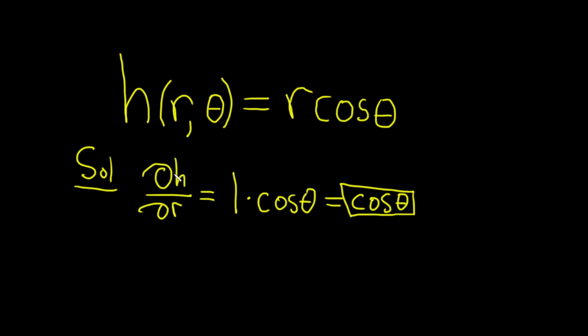Again, when you're finding the partial with respect to r, you have to treat all of the other variables as constants.